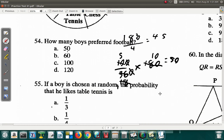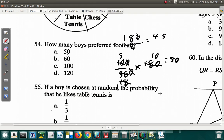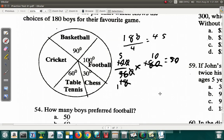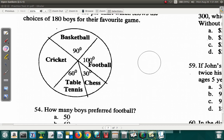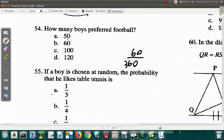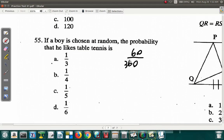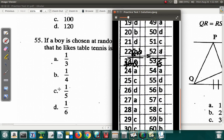Now let's look at what 55 says. If a boy is chosen at random, the probability that he likes tennis is - table tennis represents 60 degrees. So the probability would be the same proportion as when you compare the angles: 60 over 360. It would be 1/6 because when you cancel, 60 into 6 is 1 time, 60 into 36 is 6. So 55 would be D. Question 55 is D.